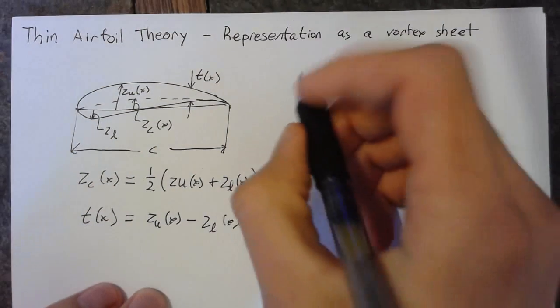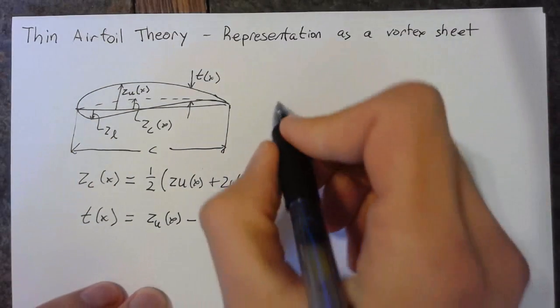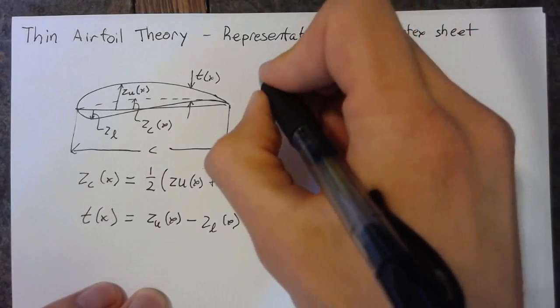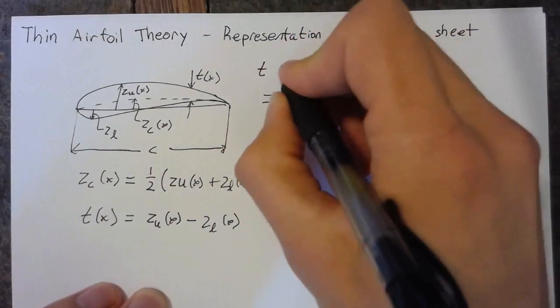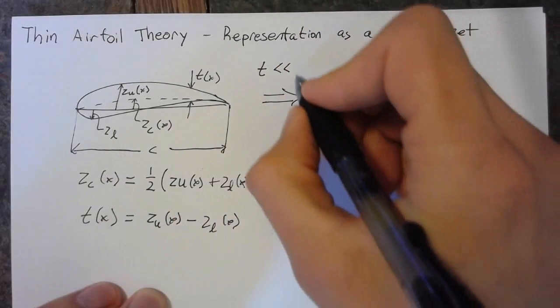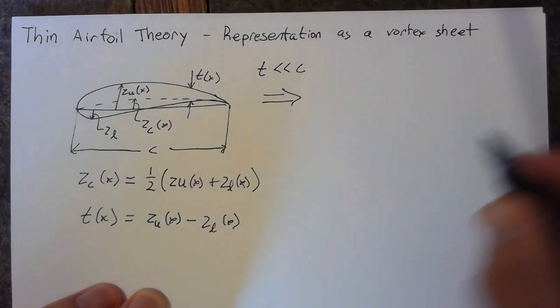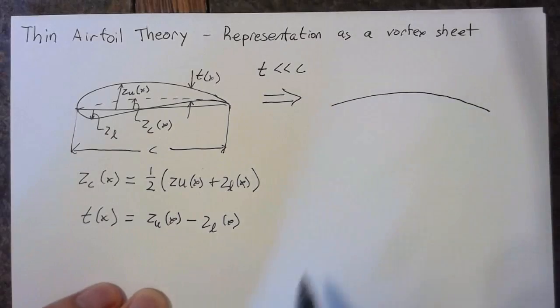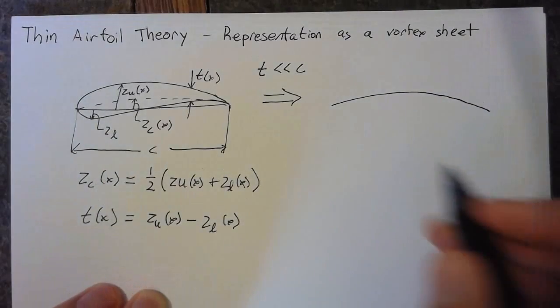Now, the representation as a vortex sheet hinges on the assumption that our airfoil is thin. And what that means is that our thickness in every x location is going to be much less than the cord. If we have that, we can just view this entire thing as a vortex sheet along the camber line.